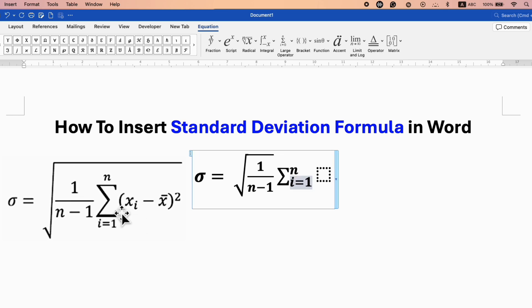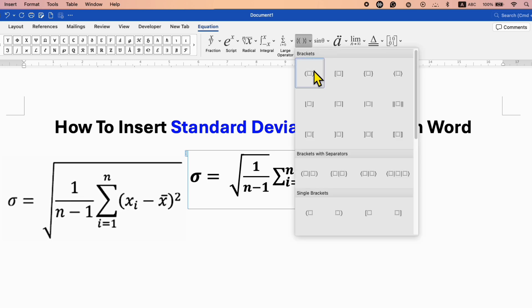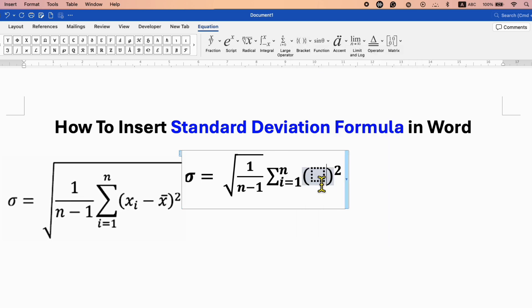Now first we need to insert the parenthesis along with the superscript 2. To do that, click inside the box, go to the Script option and select superscript. Now type 2. Click inside the box, go to Bracket, and select parenthesis.